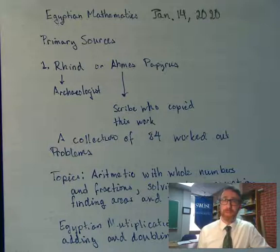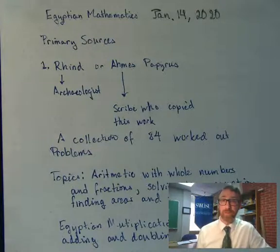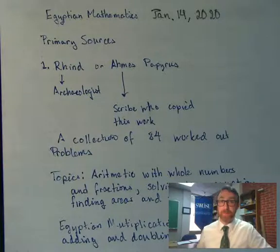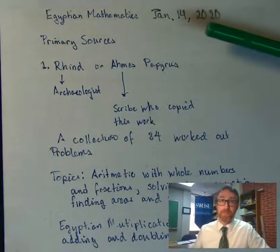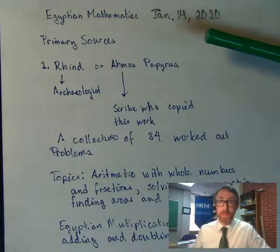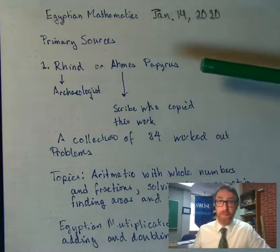The first chapter in Makers of Mathematics is called Beginnings, and it discusses the mathematics of ancient Egypt and Mesopotamia. So here on the document camera, I've got some notes for us. I'll be making these available through Canvas as well.